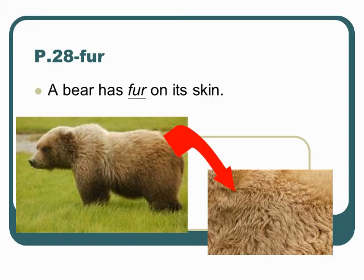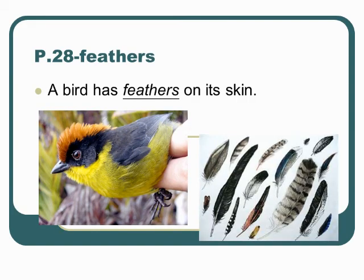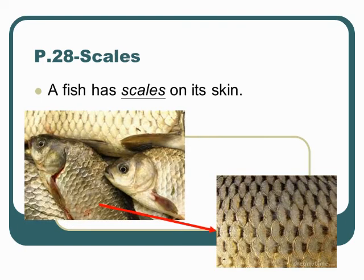A bear has fur on its skin. Page 28. Feathers: A bird has feathers on its skin. Page 28. Scales: A fish has scales on its skin.